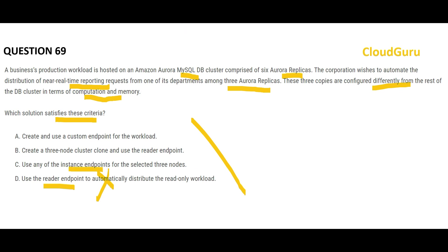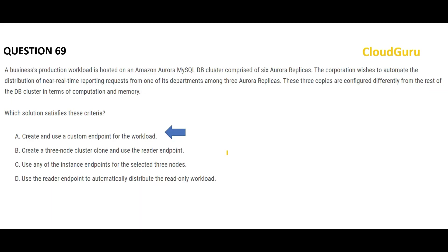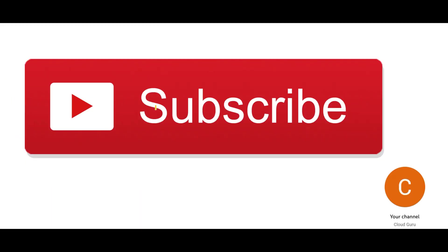Option C suggests using instance endpoints for the selected three nodes — but again, that only addresses those three nodes and ignores the other clusters, making it half a solution and therefore wrong. Option B says to create a three-node cluster clone and use a reader endpoint — that is also wrong. The correct answer is to create a custom endpoint. Custom endpoints address both parts: the read replicas where report requests will hit, and the other operations on the remaining nodes — letting the custom endpoint handle the routing.